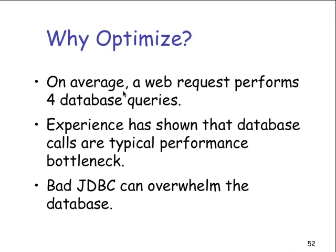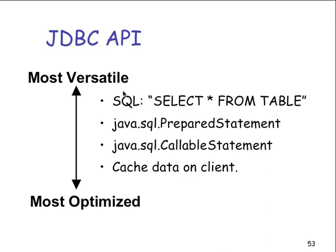Bad JDBC can overwhelm the database, as can not using JDBC or using something else. Looking at the API, we have the most versatile versus the most optimized — the more optimized we make it, the less flexible it is, which is a tradeoff. In terms of SQL, we can do a SELECT * from a table and use a prepared statement, callable statement, or cache the data on the client. When we cache data, we have to restore or refresh it, because if we don't, the data becomes stale.